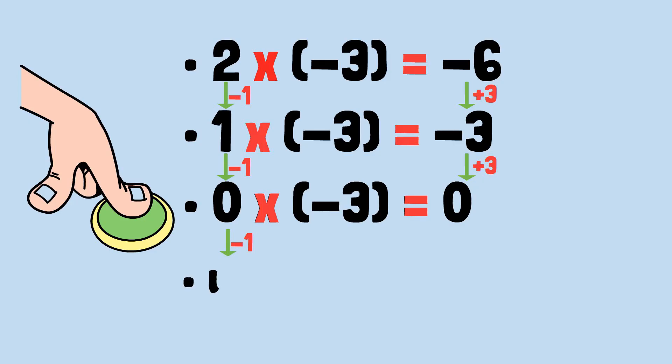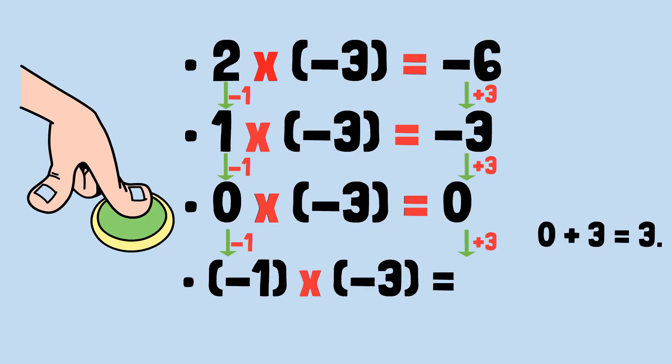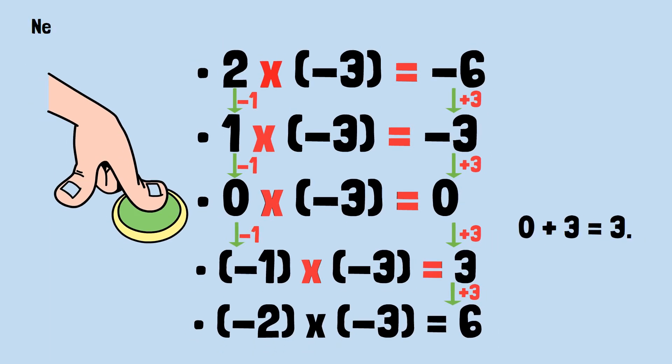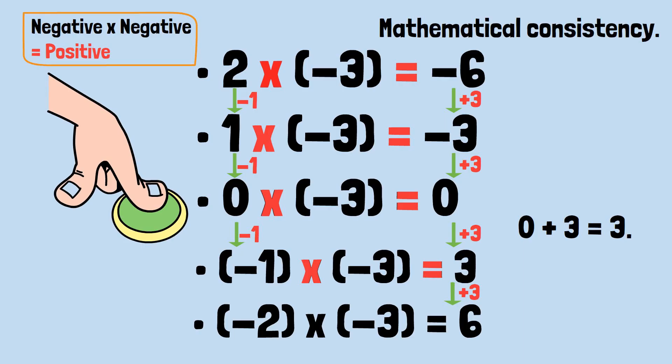If we decrease the first number by 1 again, we get (-1) × (-3) equals. Following our pattern, the product should increase by 3, giving us 0 + 3, which equals 3. So, (-1) × (-3) = positive 3. Let's continue one more step. (-2) × (-3) = 6. Increased by 3 again. And there it is. A negative times a negative equals a positive. Not because someone arbitrarily decided it should be that way, but because mathematical consistency requires it.